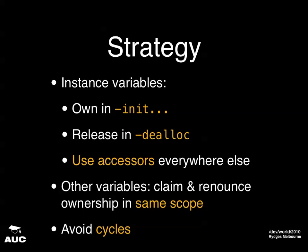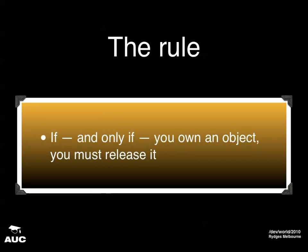To summarize: manage your instance variables by using accessor methods everywhere except in init and dealloc. For other variables, manage them within the scope where they're used and avoid retained cycles. The bottom line is the one rule: if you own the object, you're responsible for releasing it. If you don't own it, you're not responsible.